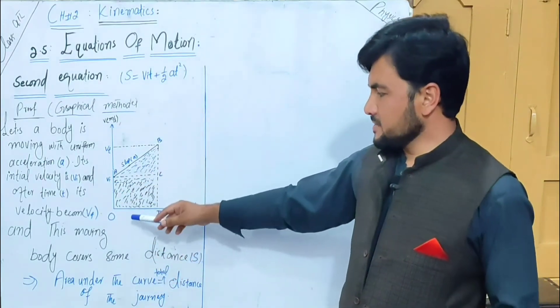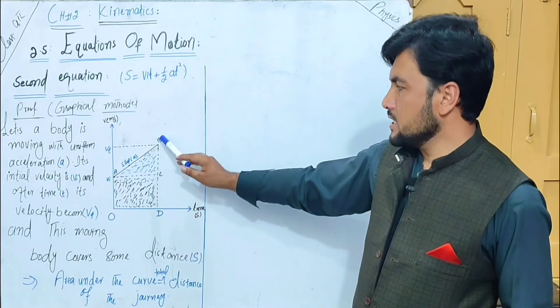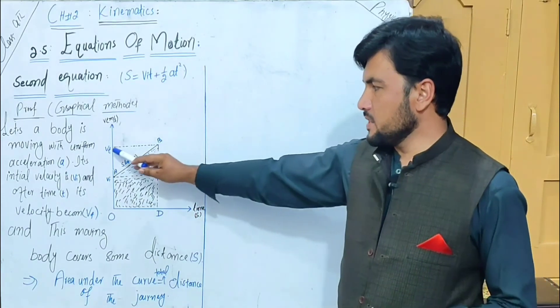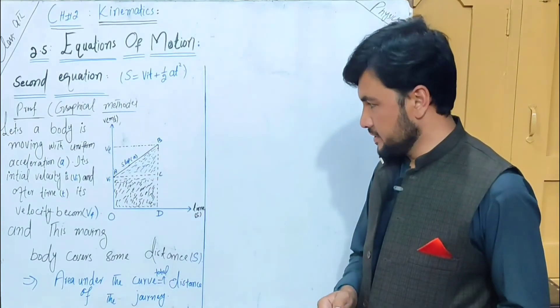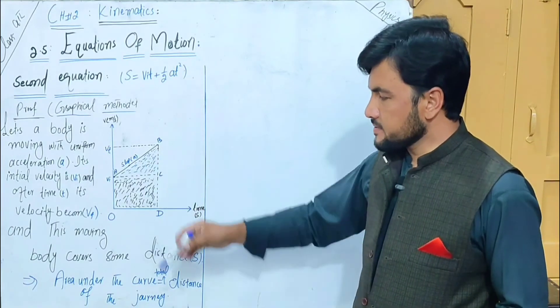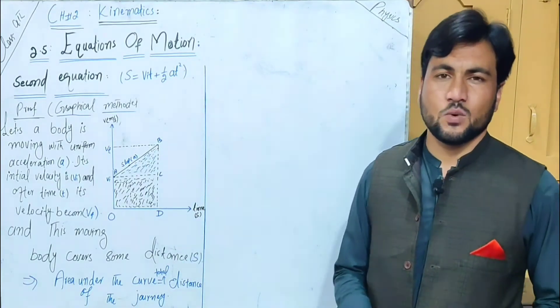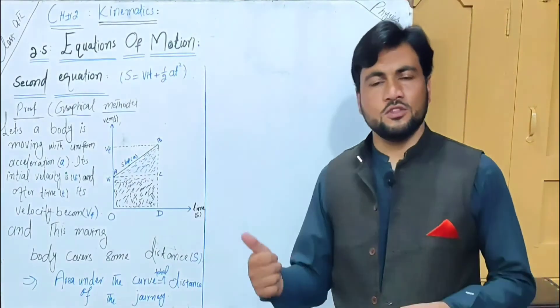At point B the object reaches. During this time the distance s is covered. In the previous lecture we discussed the velocity-time graph.